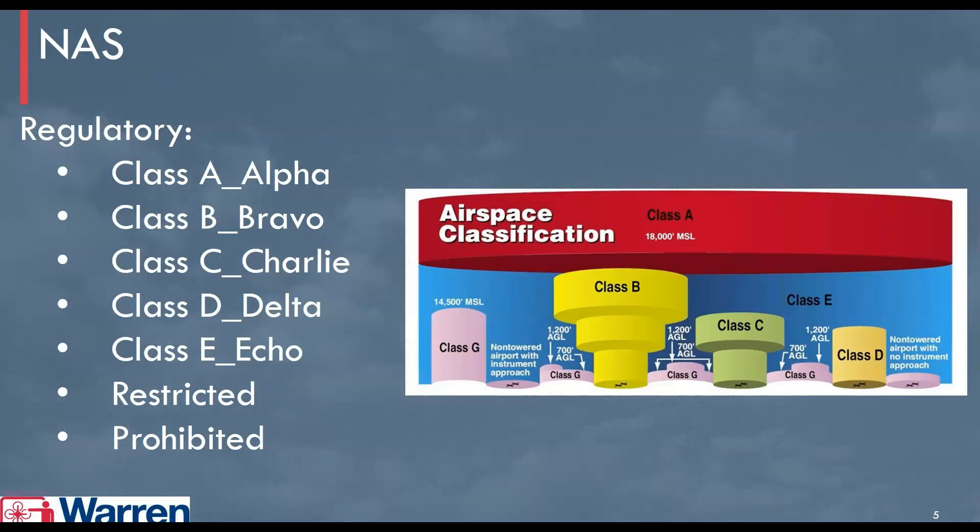We often refer to these as Class A or Class Alpha — you'll hear it said either way. Class B is Class Bravo. Class C is Class Charlie. Class D is Class Delta. Class E is Class Echo. Restricted and prohibited. That is the phonetic language used by airmen, and these terms will be used interchangeably depending on who you're speaking to.